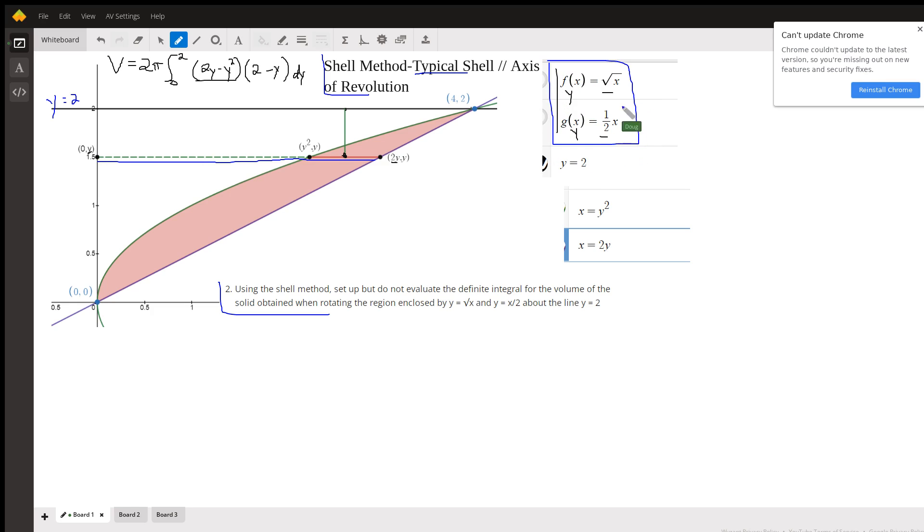We need to solve for x so that we have an x distance in terms of y, which is what I did here. Then you have to find these points of intersection. This happened by setting the square root of x equal to one half x and solving for x. Two points. Our typical shells will be occurring in the interval from zero to two along the y-axis.